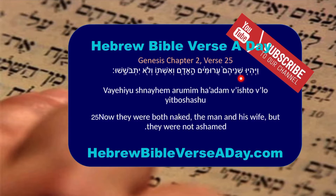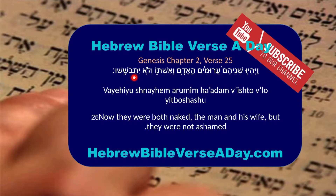The two of them were naked - that's Adam and his wife. Remember, 'isha' is his wife; 'ishto' is his wife. 'V'lo yitboshu' - they were not embarrassed. 'Lehitbayesh' is to embarrass someone in modern Hebrew, and you can see it's the same root here.